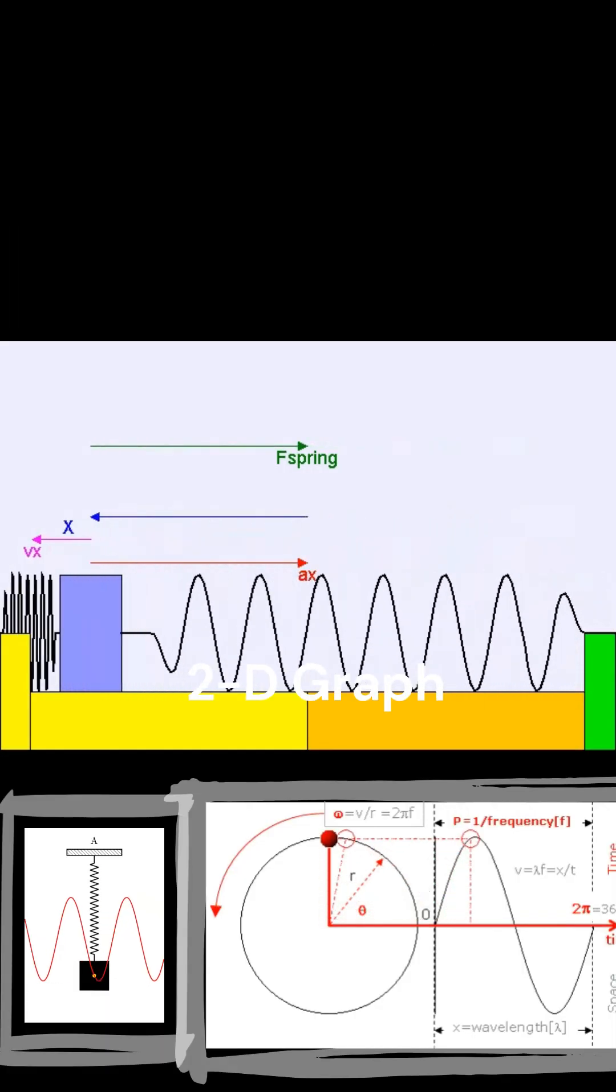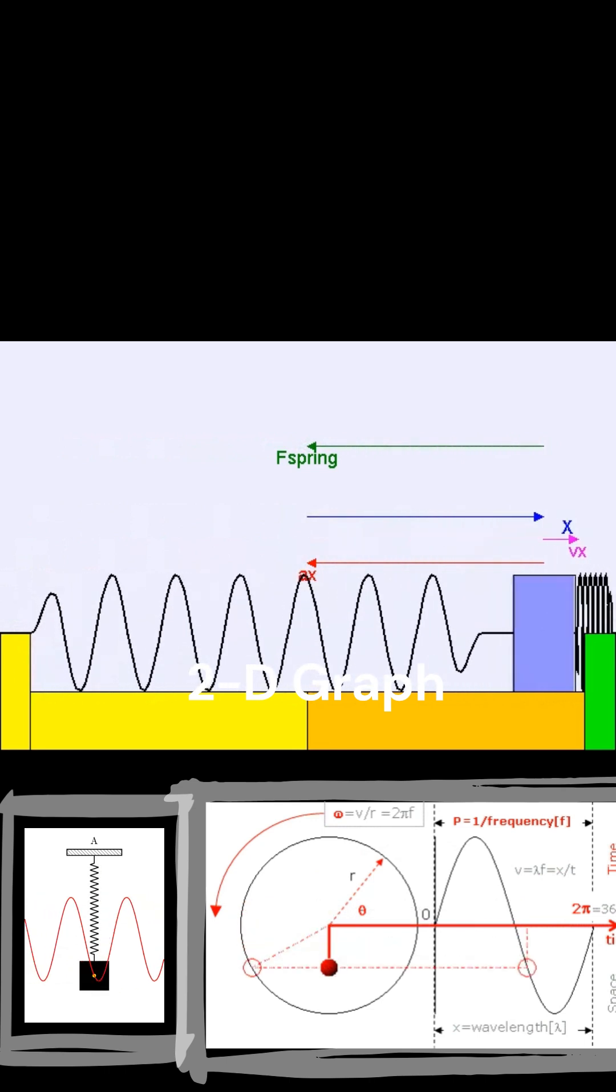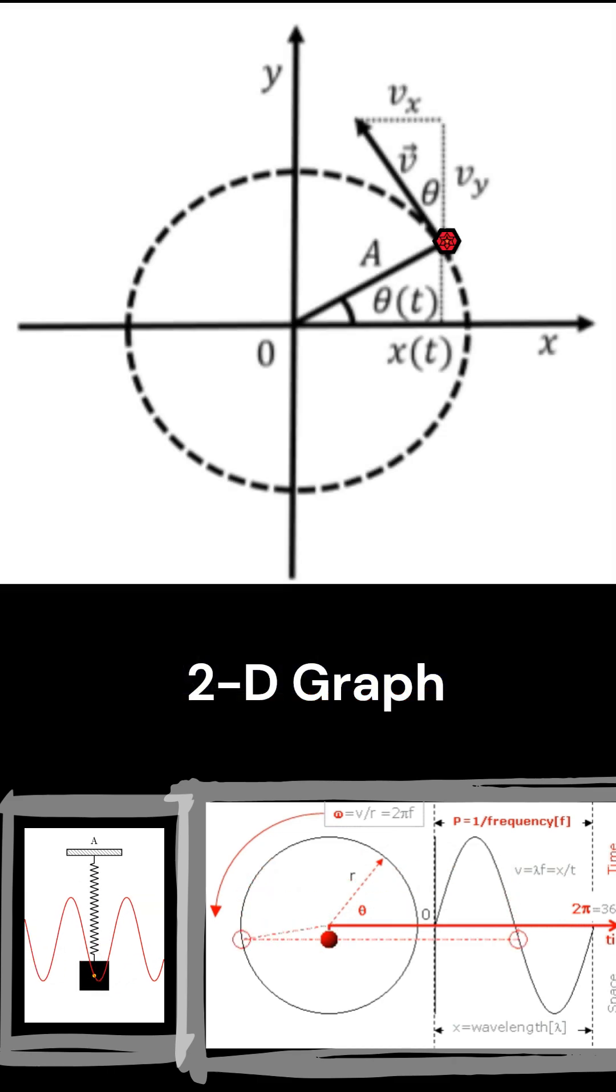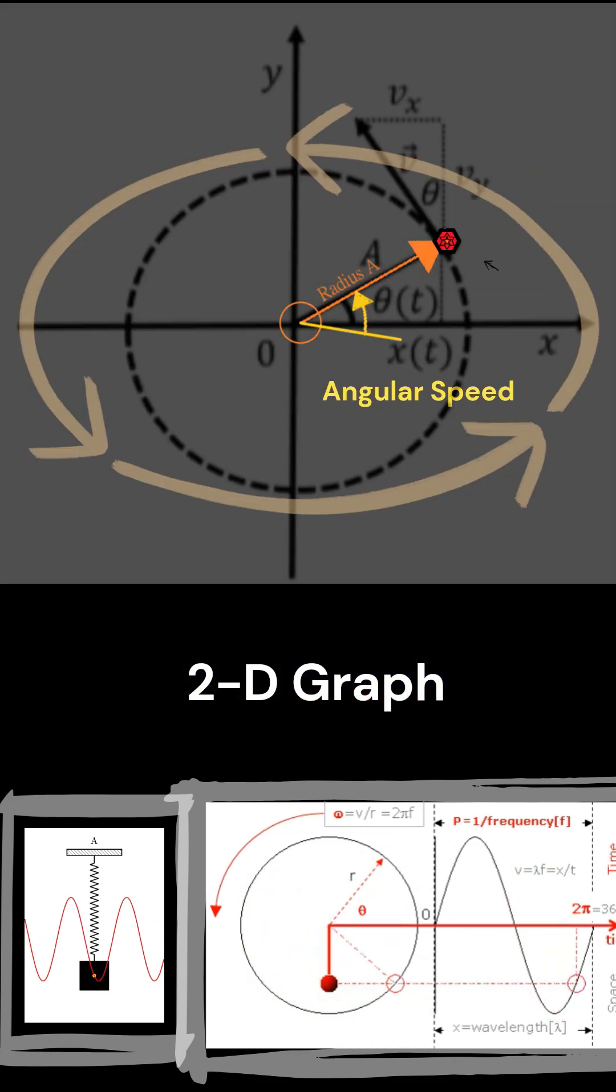We can make an analogy between the mathematical description of the motion of a spring mass system and that of uniform circular motion. Consider a particle that is moving along a circle of radius a with constant angular speed.